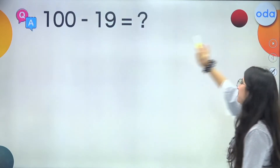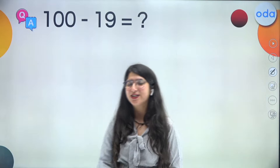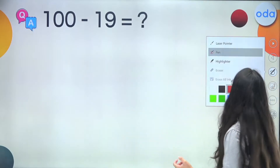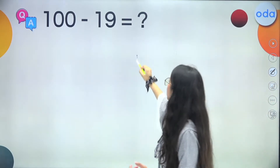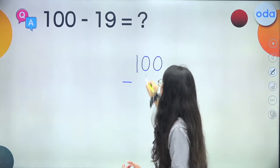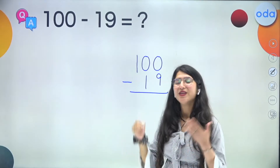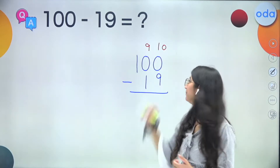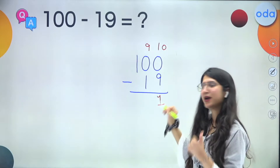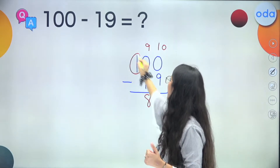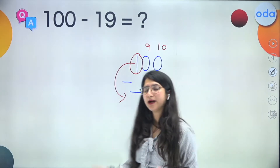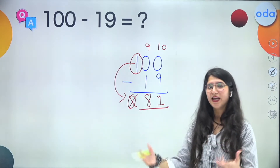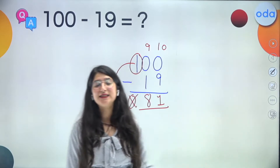Let us do another question: 100 minus 19. Keep the sutra in your mind — last from 10, all from 9. So this digit from 10, this from 9: 10 minus 9 is 1, 9 minus 1 is 8. For the leading 1, take the predecessor, which is 0 — but no need to write 0 here as it won't make any change to our answer. Answer is 81.